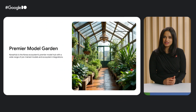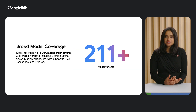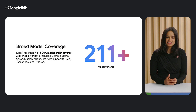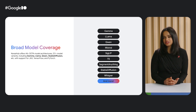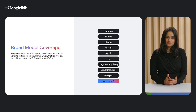Hey everyone, my name is Divya, and today I'm going to talk about Keras Hub, the Keras model garden that comes with a rich collection of pre-trained models and seamless integrations. Keras Hub boasts a remarkable selection of over 211 model variants based on 44-plus state-of-the-art architectures. These include models like Gemma, LLaMA, Qwen, Stable Diffusion, etc., all ready for you to use with JAX, TensorFlow, or PyTorch training frameworks.